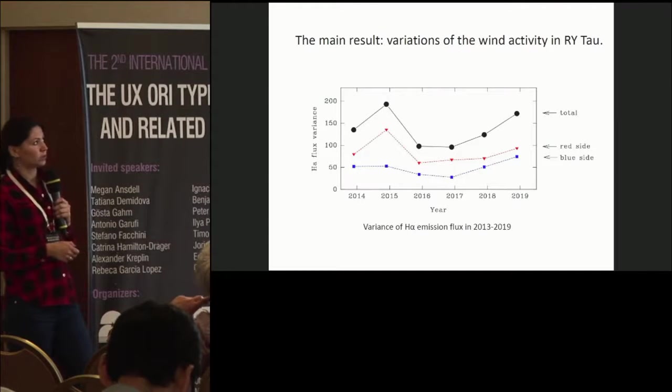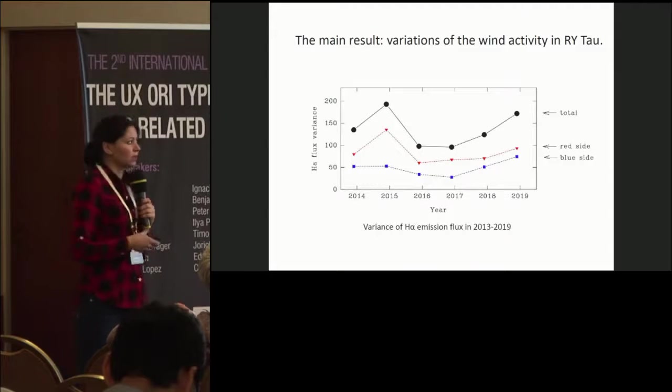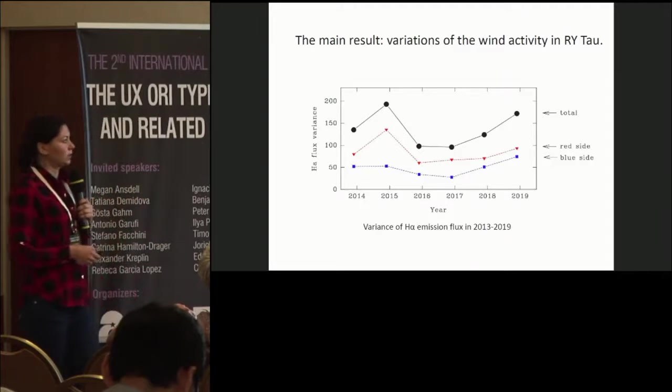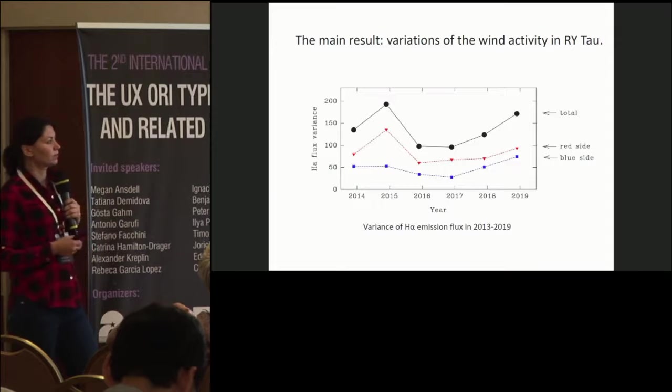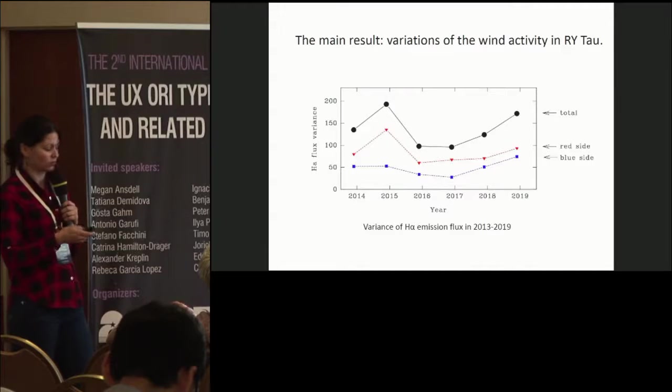Variations of the wind activity in RY Tauri. We see that in 2015, the star was mostly active, followed by a minimum in 2016 and 17 and slowly rise to the last season of observations.